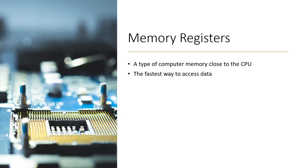Memory registers are a type of computer memory very close to the CPU, and they are the fastest possible memory for us to access. We will always try to store things in memory registers before storing them externally in things like RAM. Memory registers are fast storage that actually exists in the CPU itself.